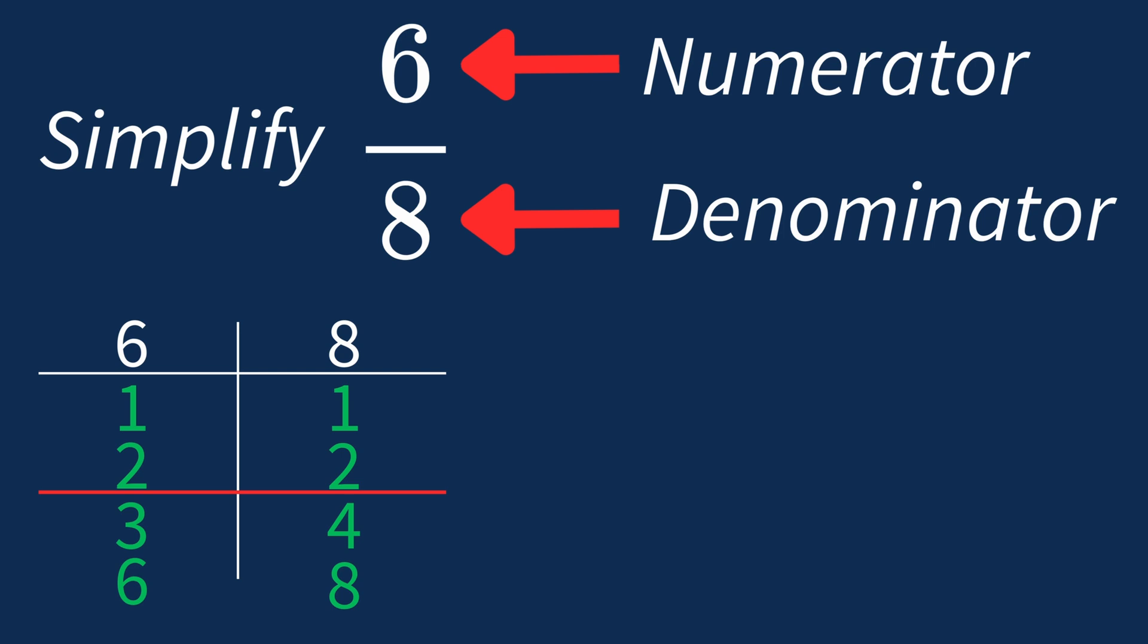This means that we can divide both the numerator and denominator by this common factor to simplify the fraction. Dividing the numerator 6 by 2 gives us 3. Then dividing the denominator 8 by 2 gives us 4.